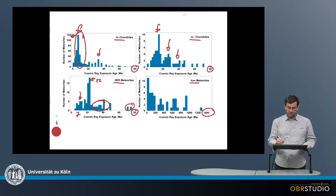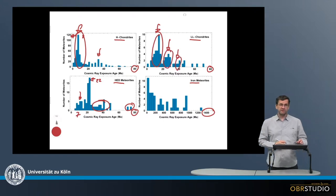All these chondrites here come from more or less one parent body, and this one and this one here as well.